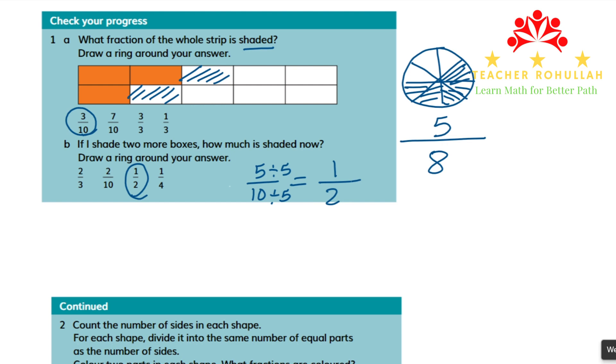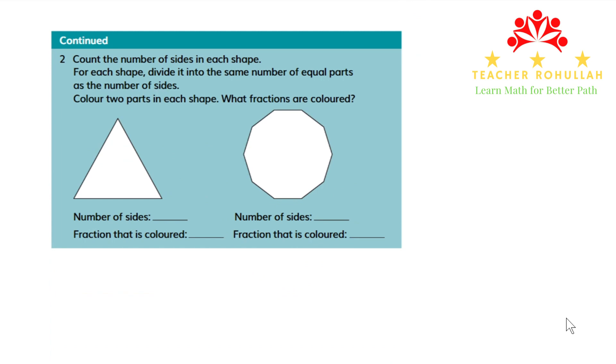In question two it says, count the number of sides in each shape. We have two shapes. For each shape, divide it into the number of equal parts as the number of sides. Color two parts of each shape. What fractions are colored?